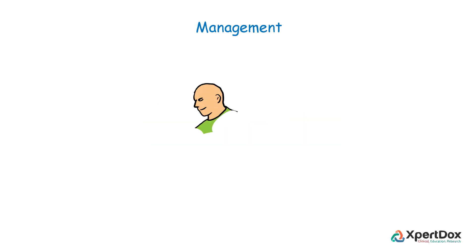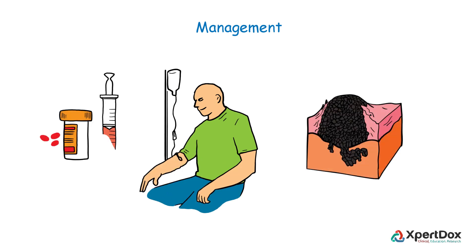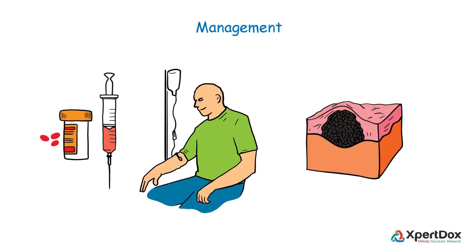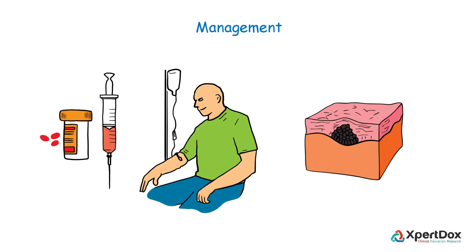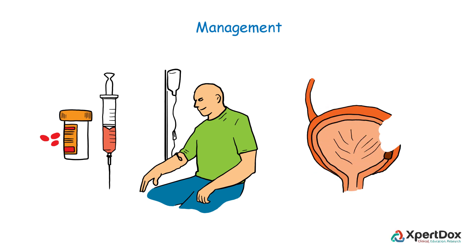Systemic chemotherapy can be used before surgery to try to shrink a large tumor, or as the main treatment for advanced bladder cancers. As a part of adjuvant therapy, it is used to kill any cancer cells that remain after other treatments.